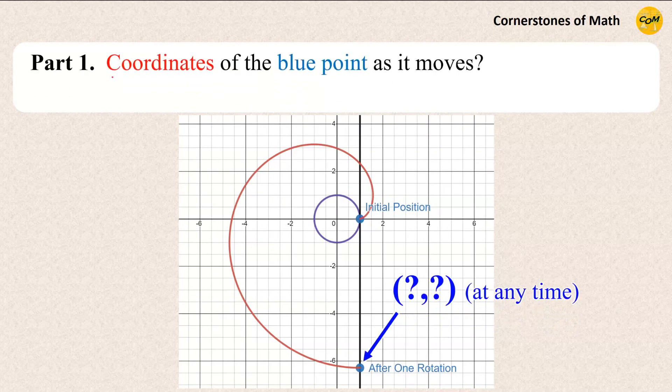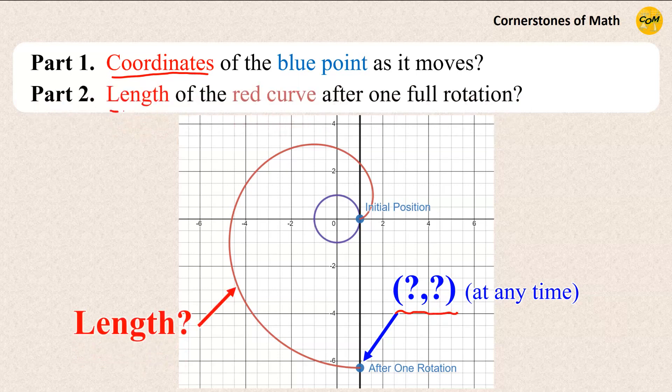First, can we find the coordinates of this moving point at any moment during the motion? That is, a generalized expression for the position of this point. Secondly, can we find the length of this red curve generated by that moving point after the line makes one full rotation around the circle? So, let's start with the first part.